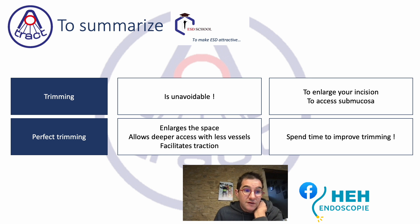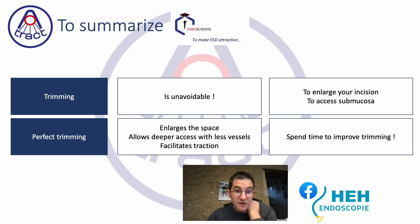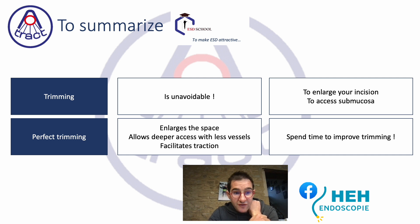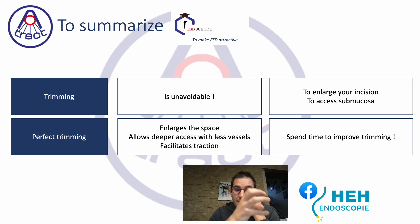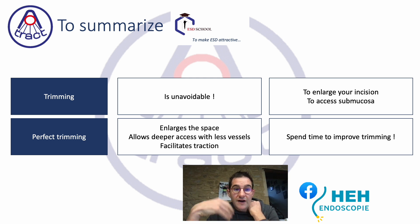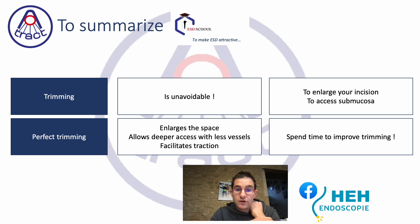In conclusion, trimming is unavoidable. It is impossible to access the submucosa and perform submucosal dissection without having proper access, so after your very small incision you must increase the space by enlarging your incision. A perfect trimming enlarges the space but also allows you to go deeper into the submucosa. There are fewer vessels in the deep submucosa than in the shallow area close to the muscularis mucosa, so even if vessels are bigger, they are easier to manage than performing many small coagulations on numerous shallow vessels.